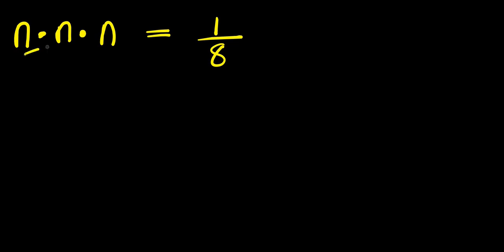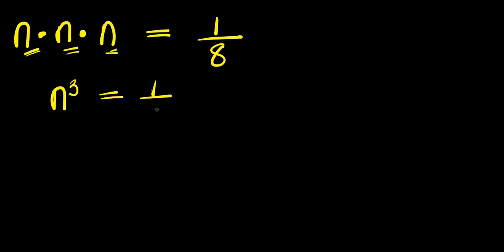Hello. How to solve n times n times n equals 1 over 8, solving for all values of n that satisfy this equation. n times n is n squared, times n, this is n cubed, and this equals 1 divided by 8.